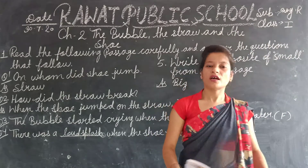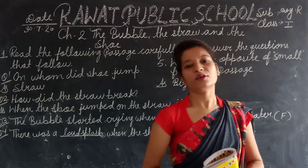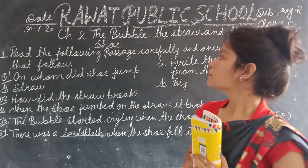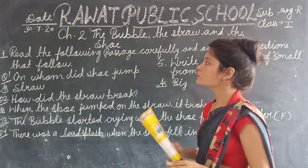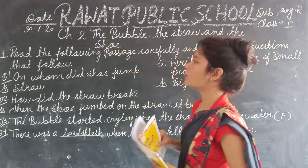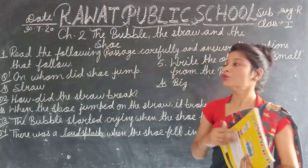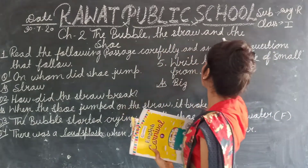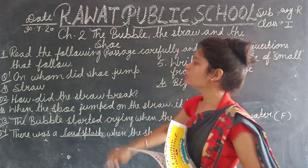Good morning children, how are you all? I hope you are very well children. Today we are doing our reader book chapter 2: The Bubble, the Straw and the Shoe.